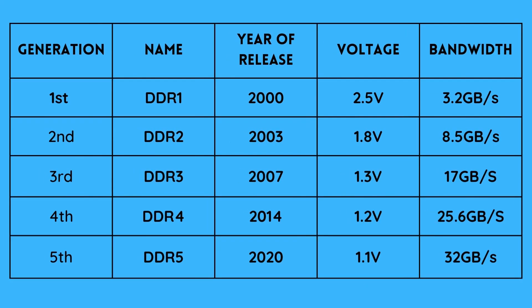Fast forward to 2007, DDR3 RAM was released with a much lower voltage of 1.3 volts and a bandwidth of 17 gigabits per second, which is double the speeds of its predecessor. Then again 7 years later in 2014, DDR4 was released with a voltage of 1.2 volts and a bandwidth of 25.6 gigabits per second. Finally, we have DDR5 which was released recently in 2020 with a voltage of 1.1 volts and speeds of 32 gigabits per second. Since it was just recently released, it is not the most common but soon it will be heading there.